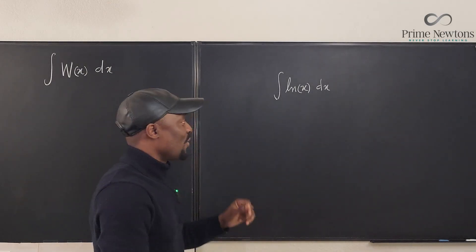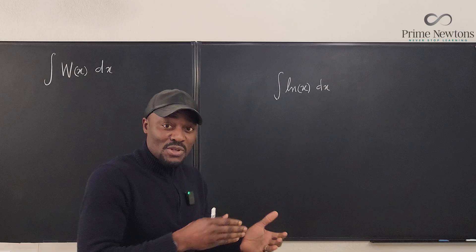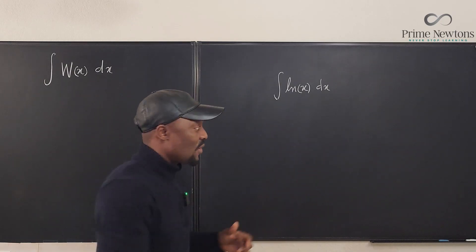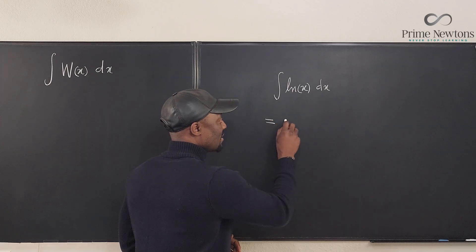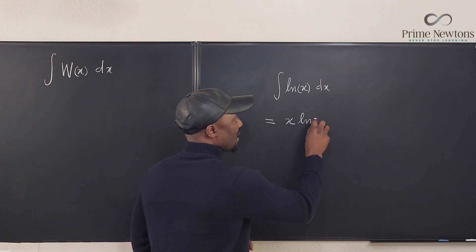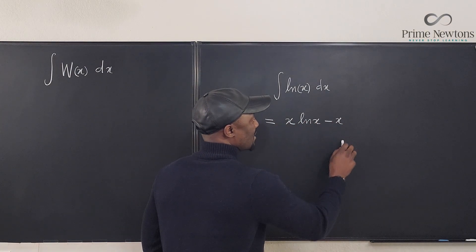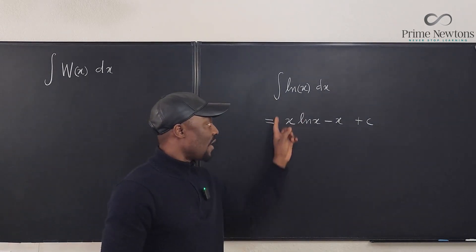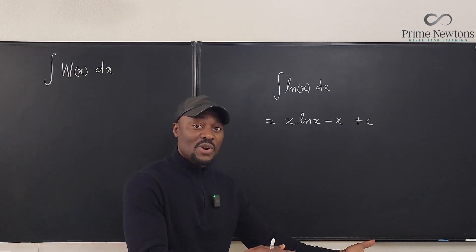Okay, we had to use u substitution or integration by parts and ultimately we got this answer that this is X ln of X minus X plus C. This is how you integrate this using integration by parts.